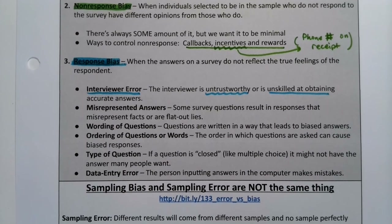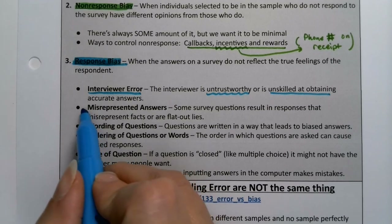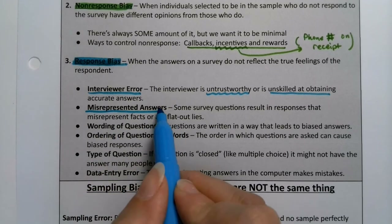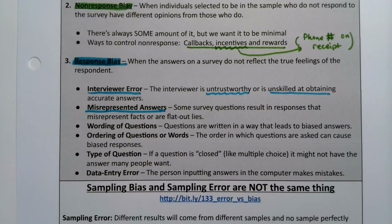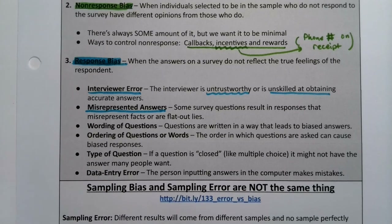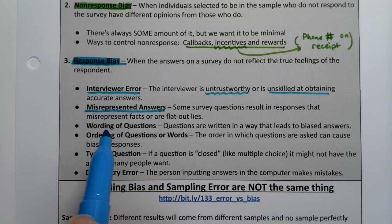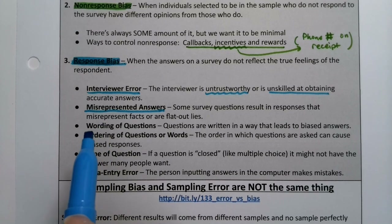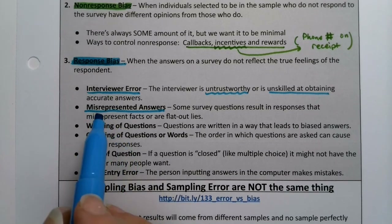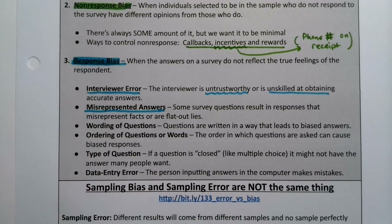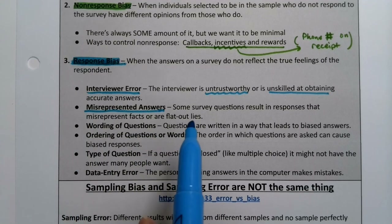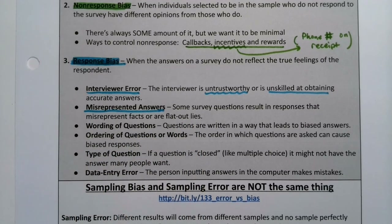Sometimes people just straight up lie. I've had this happen to me when I was in college — they asked what my household income was, and I had no idea. That's not something I ask my parents, so I just made it up. That's misrepresenting answers — I was sort of lying because I just didn't know what it was.